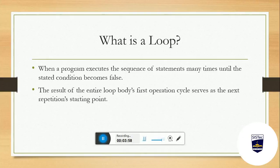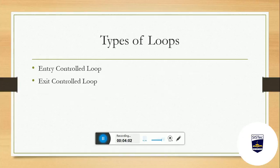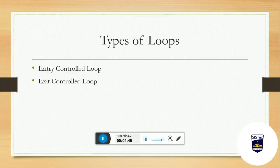तो यह हमारा पूरा loop का concept होता है। अब loop के types क्या होते हैं? दो types के loop होते हैं — एक होता है entry control loop और एक होता है exit control loop. Entry control loop में condition is checked before executing the body of a loop — मतलब loop की body execute होने से पहले condition check होती है। इसको हम pre-checking loop भी कहते हैं। Exit control loop में condition check होती है एक बार पूरी loop body execute होने के बाद।